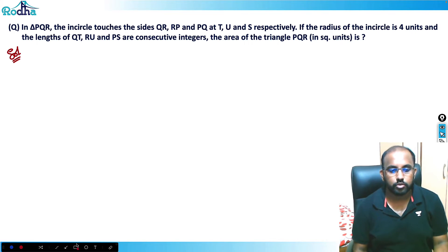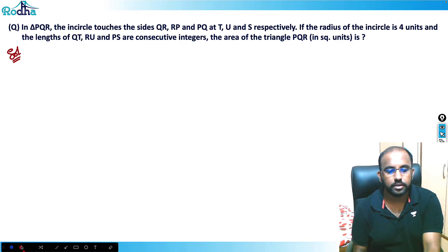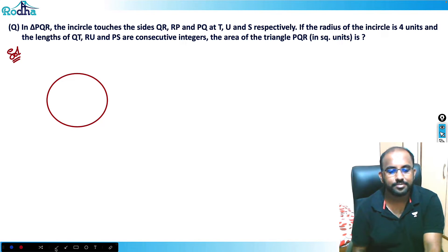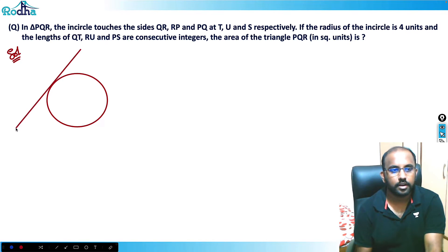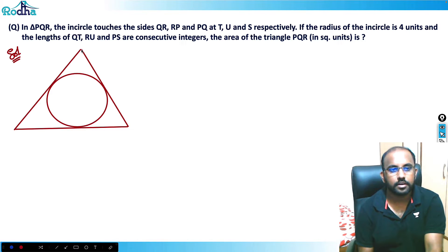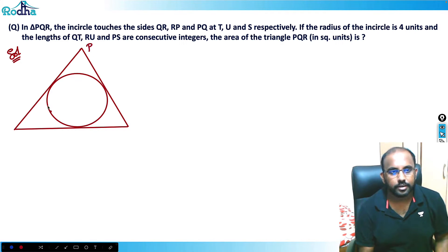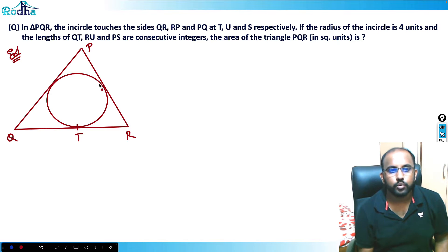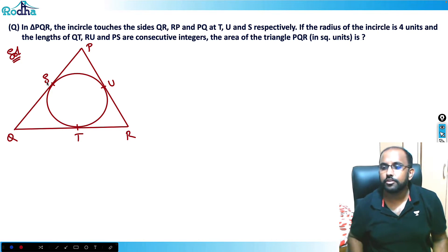Let's try to solve this. We'll draw a circle and make a diagram. This is triangle PQR. The incircle touches side QR at T, RP at U, and PQ at S.